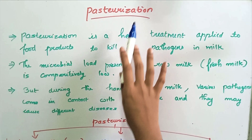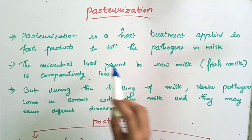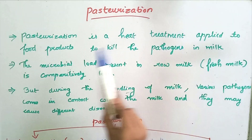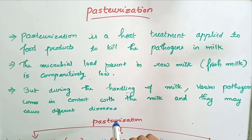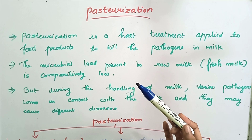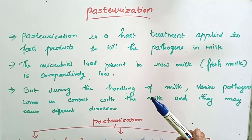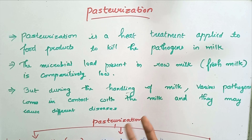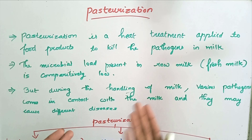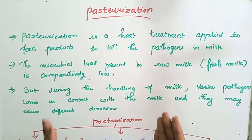Today we are going to study about pasteurization. Pasteurization is a heat treatment applied to food products to kill the pathogens. It is applied to liquid foods — not only milk, but also juices. Basically, we are heating the food product in order to kill the pathogens present in it.